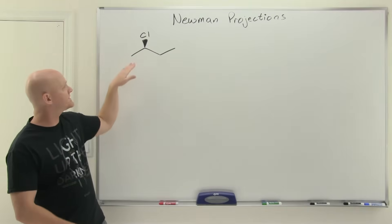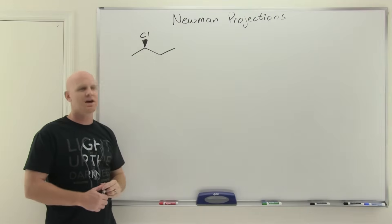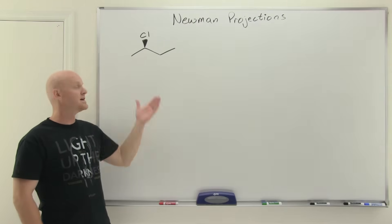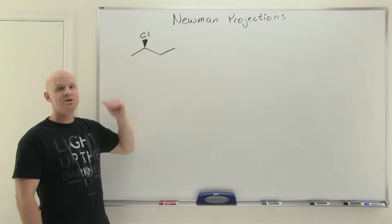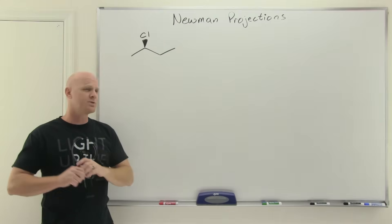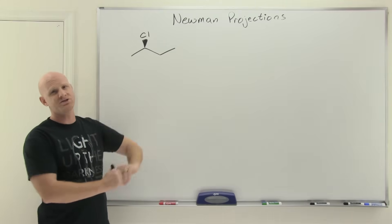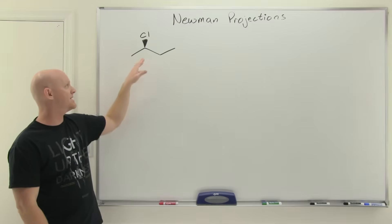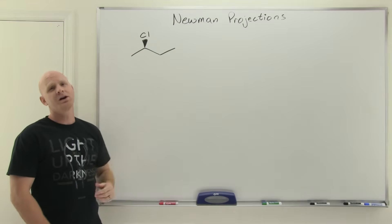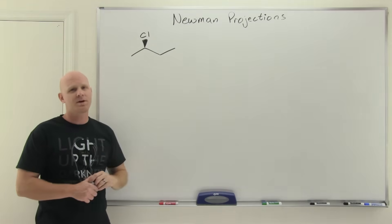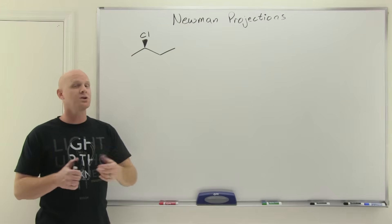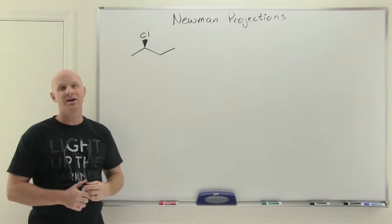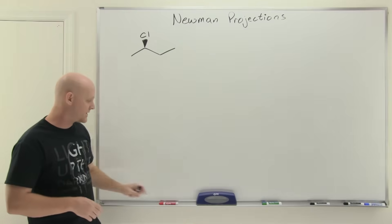Now that we've looked at butane, we want to take a look at a more complicated example — some sort of variant of 2-chlorobutane. I say some variant because it turns out there are two different stereoisomers of 2-chlorobutane, but you'll learn that in the next chapter. With 2-chlorobutane, a common question on an organic chemistry exam is simply to draw the lowest energy conformation of the molecule, and they usually specify which bond you want to look down.